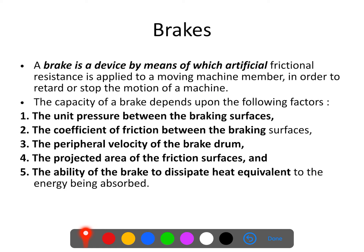We stop the motion of the machine by applying artificial friction, so friction plays a very important part in the working of the brake. The capacity of the brakes depends upon the following factors: first, the unit pressure between the braking surfaces — whatever two surfaces are coming in contact; second, the coefficient of friction, which is the means by which the brakes are applied; and third, the peripheral velocity of the brake drum, which also decides the capacity of the brake.